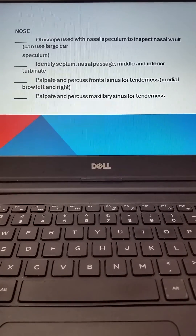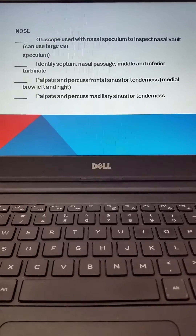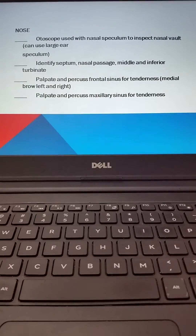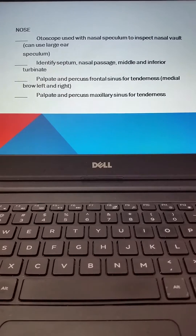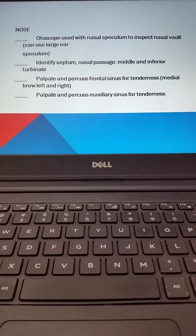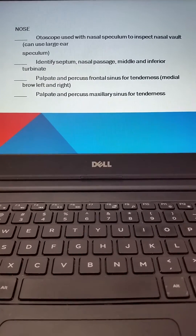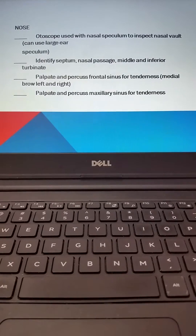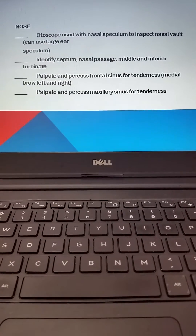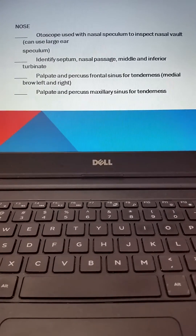Once you're done with the nasal exam of the interior, you then palpate the frontal sinus for tenderness above the medial brow — left and right, bilaterally and simultaneously — and then palpate and percuss the maxillary sinus bilaterally and simultaneously.